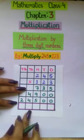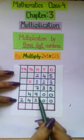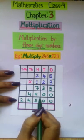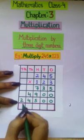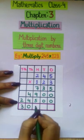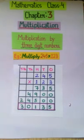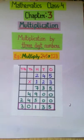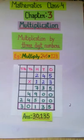Then we add the partial products. 735 plus 4900 plus 24,500. And the answer is 30,135. Therefore, 245 multiplied by 123 is 30,135. This was an example of multiplication by 3 digit numbers.